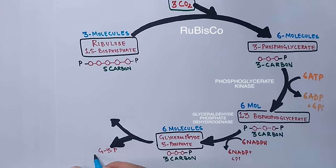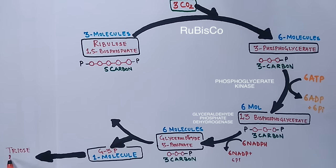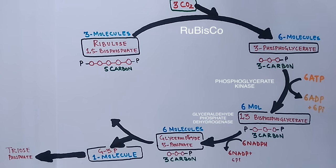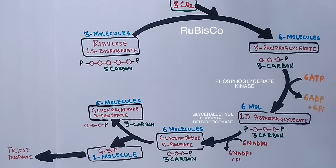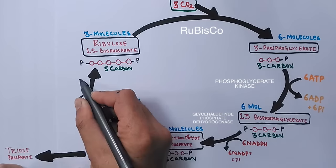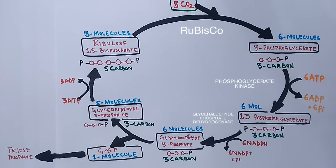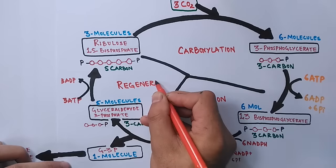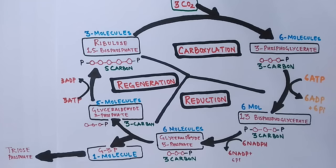One molecule of glyceraldehyde-3-phosphate forms triose phosphate, which later synthesizes carbohydrate molecules after several turns of the cycle. Triose phosphate has three carbons — one molecule means only three carbons, hence the name triose phosphate. The remaining five G3P molecules contain 15 carbon atoms and are used to regenerate ribulose bisphosphate to continue the cycle. The cycle runs again making another triose molecule, which combines with the previous triose phosphate to give the 6-carbon molecule glucose. To synthesize a single glucose molecule, the cycle runs six times.